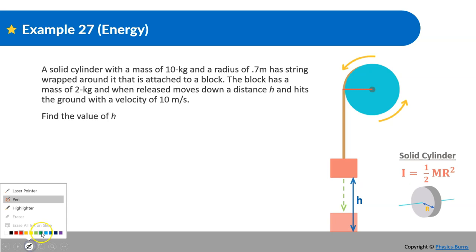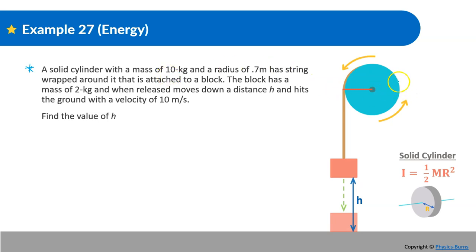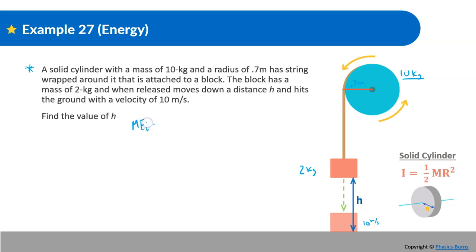Next example: a fallen cylinder with a mass of 10 kilograms and radius of 0.7 meters has a string wrapped around it attached to a block of mass 2 kilograms. When released, the block moves down a distance h and hits the ground with a velocity of 10 meters per second. Find the value of h. This is a conservation of energy problem — we compare energy at the start with energy just before impact.